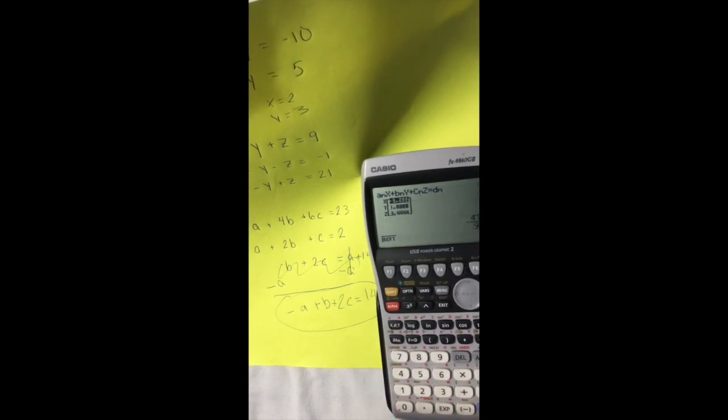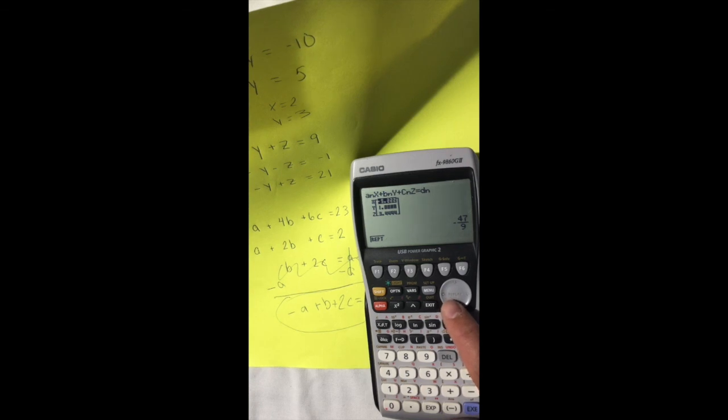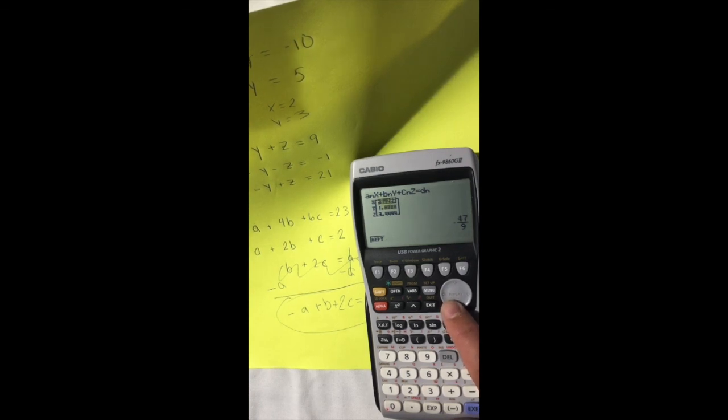We hit enter, enter. And this is what our equations equal. This is what our variables equal. A was negative 47 over 9, 17 over 9 for b, and 31 over 9 for c.